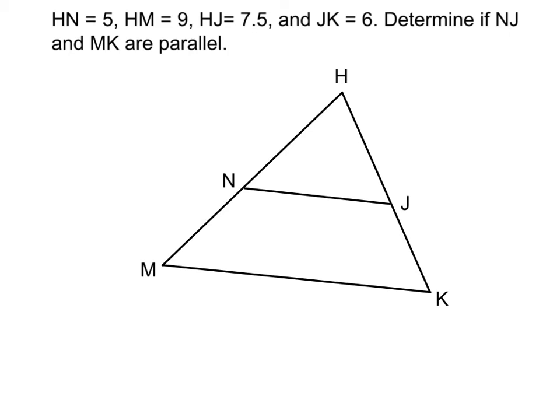We can also use proportions to determine whether these two cross lines are parallel. Here we have HN equals 5, HM equals 9, HG equals 7.5, and JK equals 6. Let's label it all. We've got another one of these long sides here, but we want the short part. So we can do 9 minus 5. That's going to give us a side length of 4. Now we can set up our proportion. Let's go ahead and do 5 over 4 is equal to 7.5 over 6.